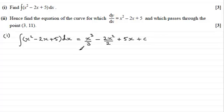And if we tidy this up, we've got the first term is still x cubed divided by 3, but for this second term, those two 2's cancel, just leaving us with minus x squared, and then we've got plus 5x, and then plus c, the constant of integration.